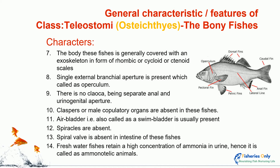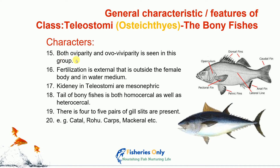Fifteenth character: both oviparity and ovoviviparity are seen in this species. Fishes that place their eggs in the environment are called oviparous — egg-laying fishes. Ovoviviparous fishes give birth to young ones, but there is no placental connection between mother and offspring; the embryo gets nourishment from the yolk only, but development is completely inside the body of the female. Fertilization is mostly external — outside the female body in the water medium. There is mostly no copulatory organ; the female lays eggs and the male releases sperm onto the eggs outside the body.